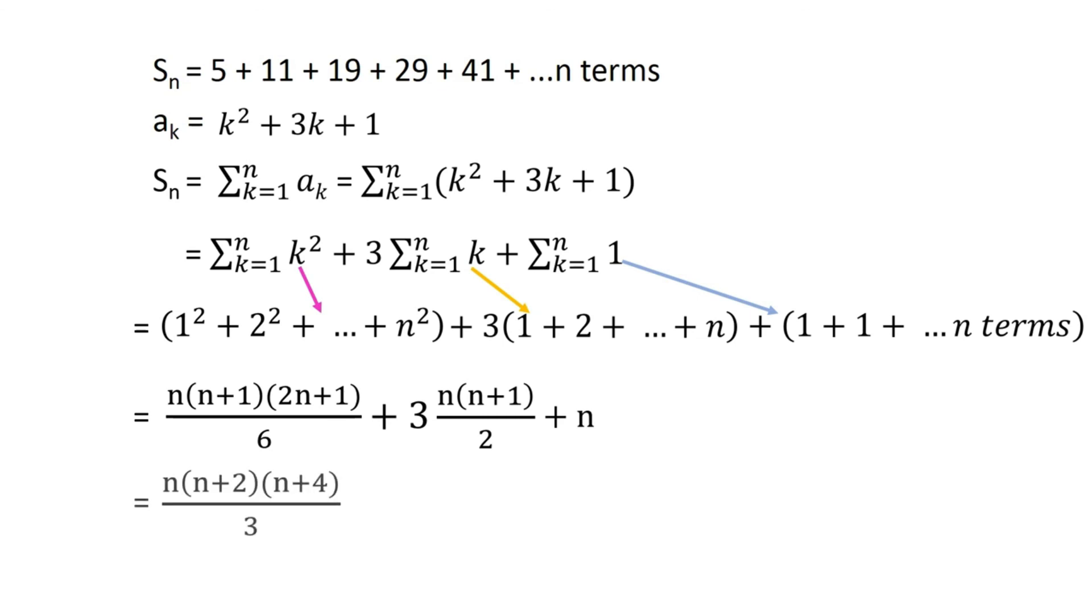Simplifying it further, we get Sn equals n times (n+2) times (n+4) divided by 3, which is the required result.